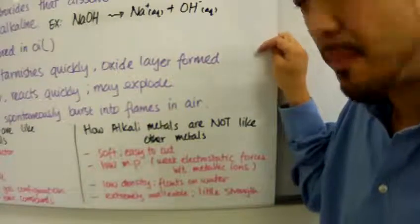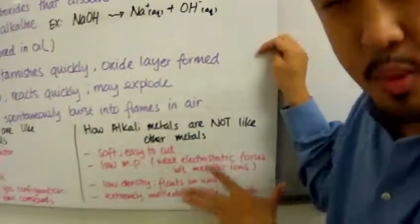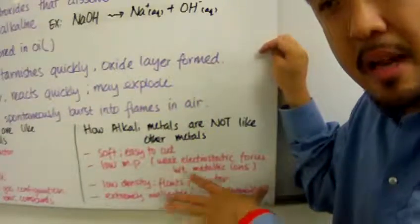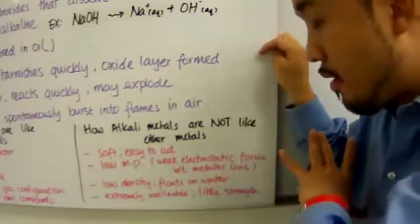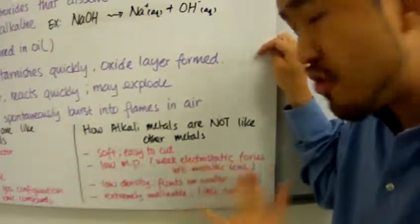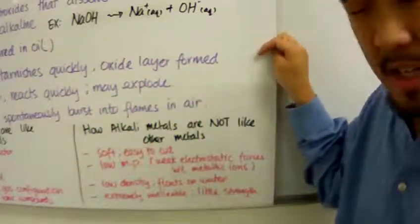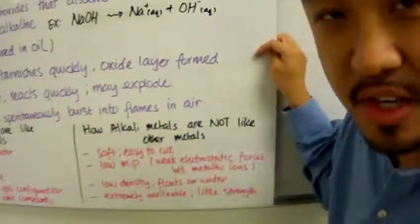Group 1 metals have weak electrostatic forces between the metallic ions, which makes them extremely malleable. You can shape them very easily, and they have very little strength.